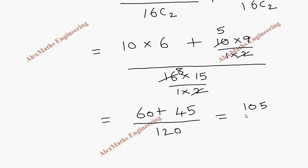So by adding the numerator we get 105, so it is 105 by 120. If I cancel 5 table, 21, if I cancel this 5 table 24, so the probability is 21 by 24.